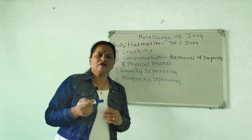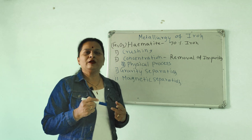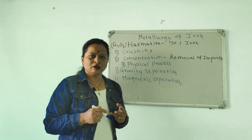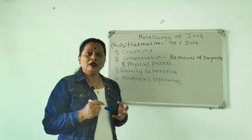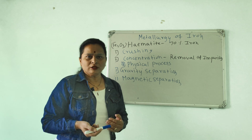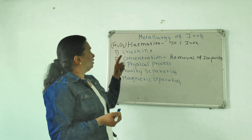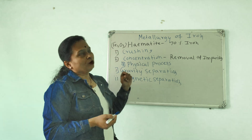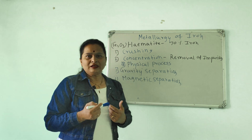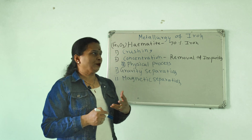In iron, there are ores such as magnetite, limonite, ferrous carbonate, and hematite. The hematite ore is used for the extraction of iron.